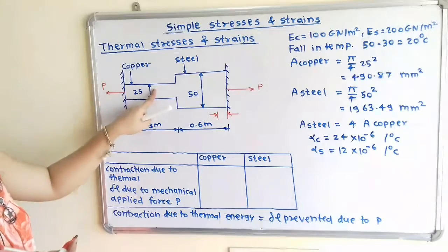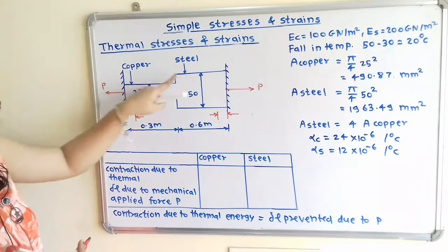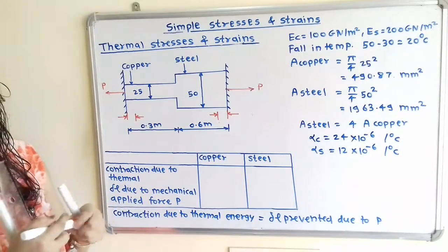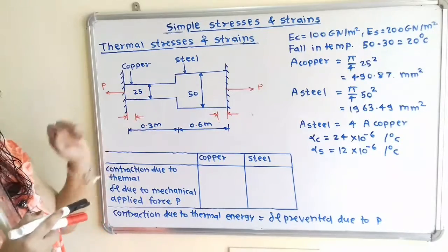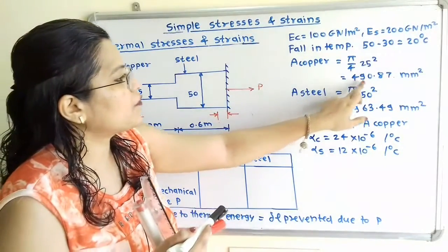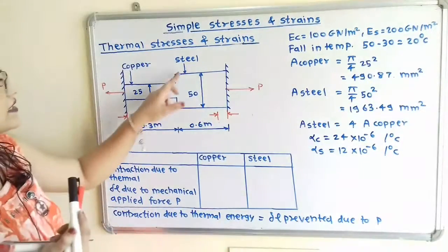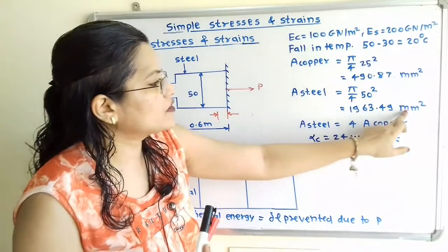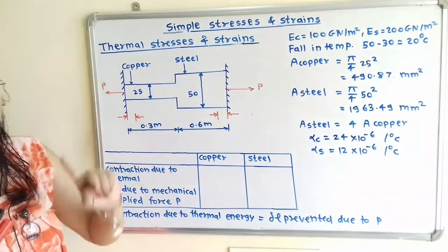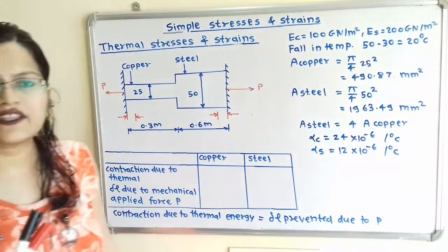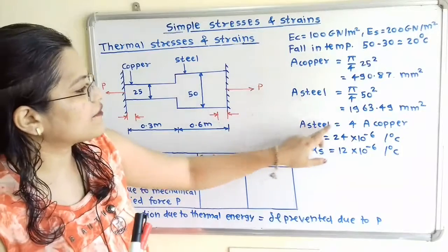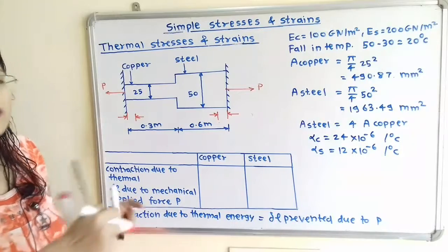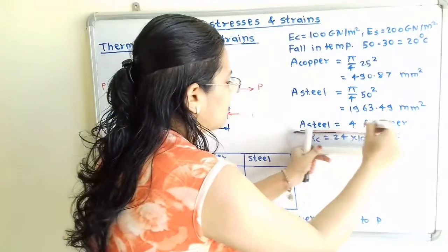If we observe the cross-sectional areas for the copper bar and steel bar, the diameters are different. Area of copper is π/4 × d² = 490.87 mm². Area of steel is 1963.49 mm². Observing the relation between area of copper and area of steel, area of steel is equal to 4 times area of copper. This relation will be useful for the calculation part.